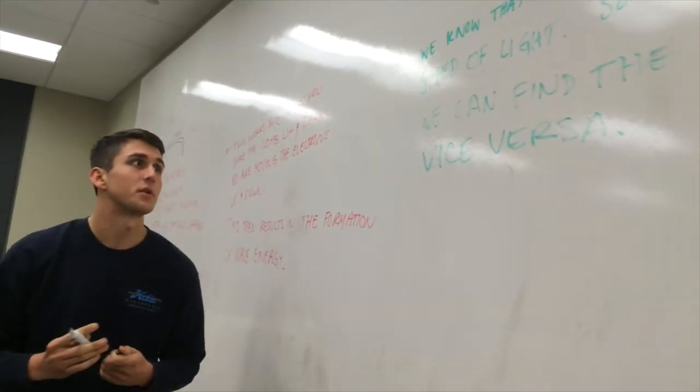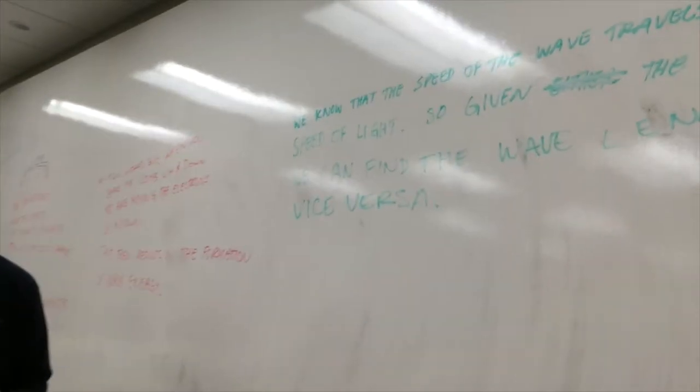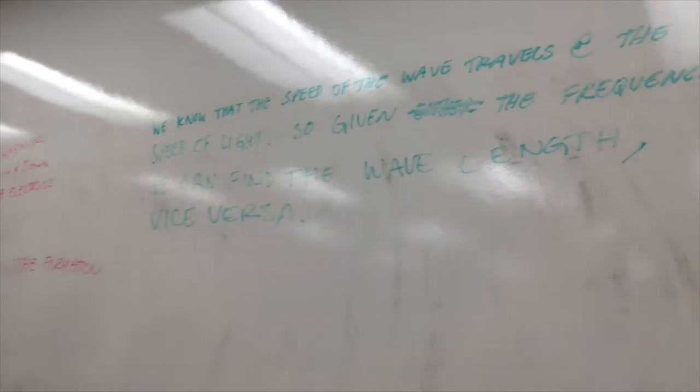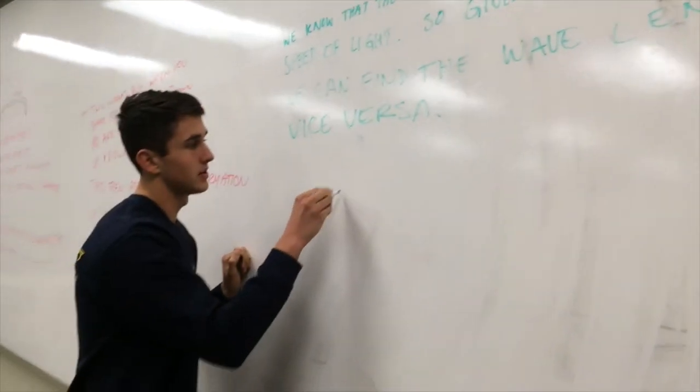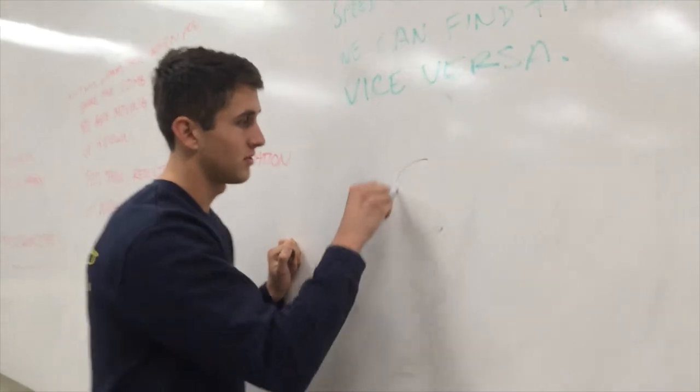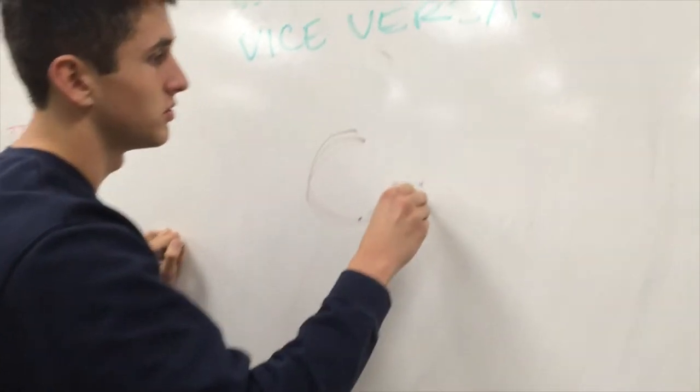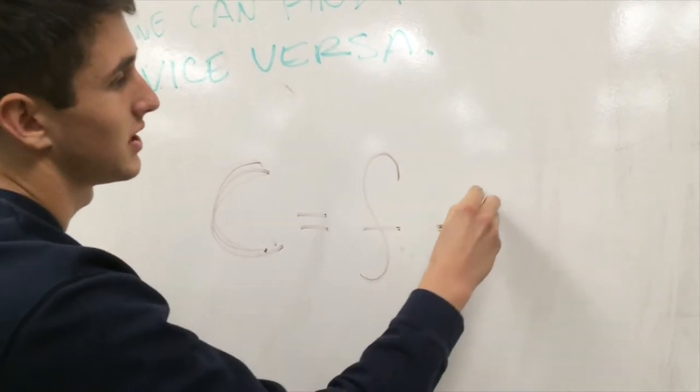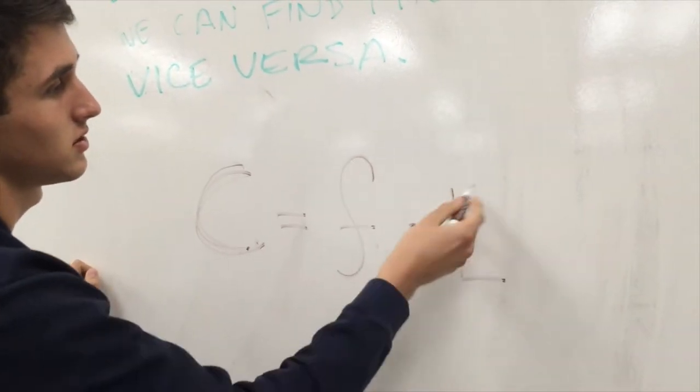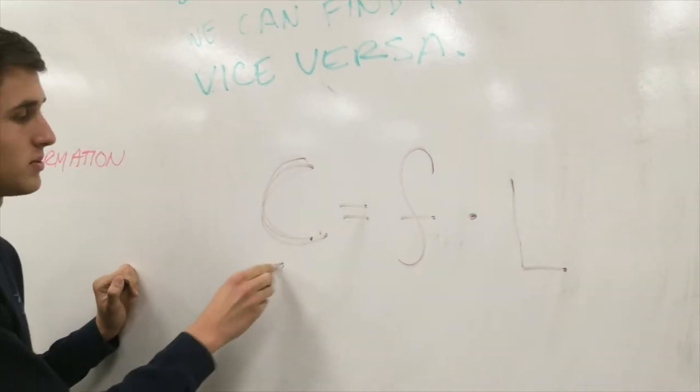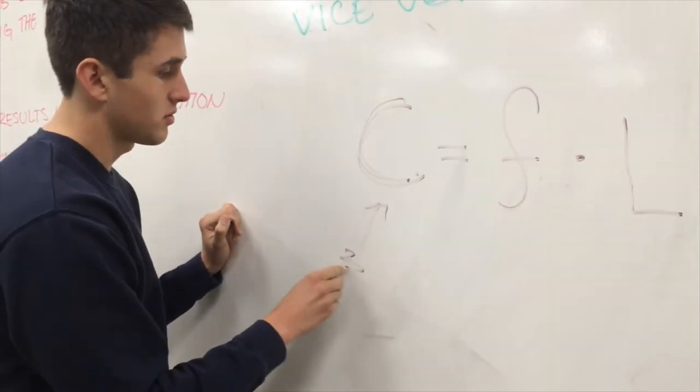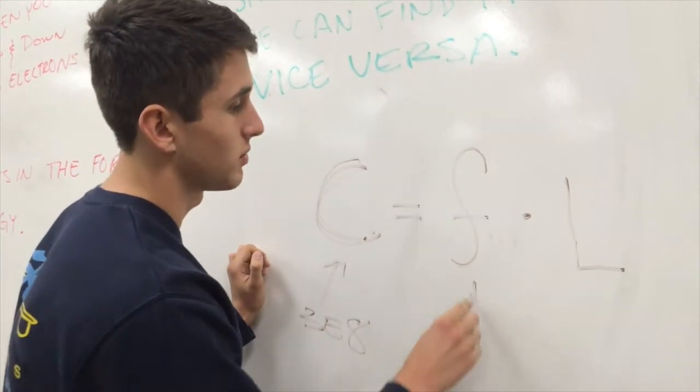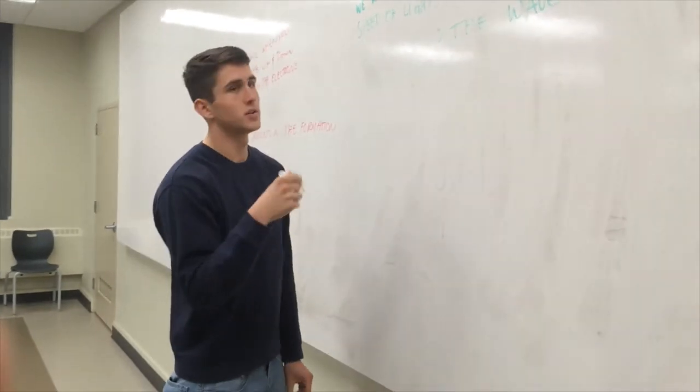We know that the speed of the wave travels at the speed of light, so given the frequency we can find the wavelength and vice versa. This equation is c equals f, being frequency, times wavelength represented by lambda. C would be speed of light, 3 times 10 to the 8.